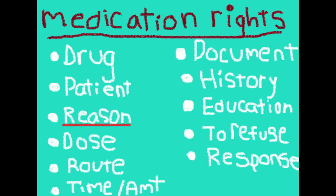The right dose — you want to refer to your state protocols, since every state is a little different with the amount you can give. You want to make sure you're not giving too much or too little. Too much can cause an overdose or adverse reactions that could be fatal, and too little means they wouldn't be getting the response from the medication, so it wouldn't be effective.